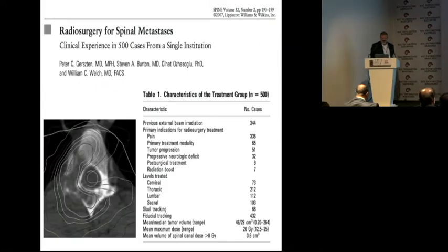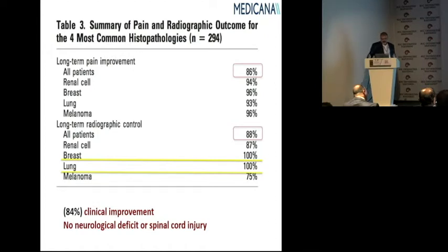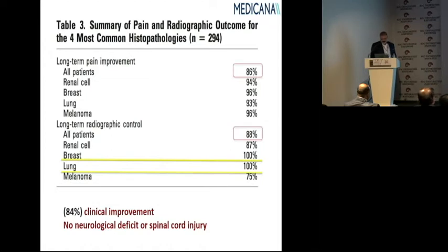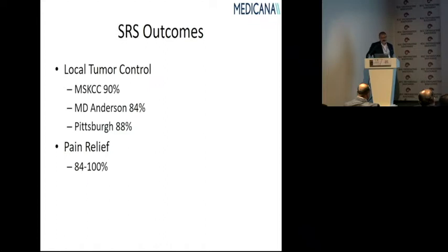Peter Gersten's 500 cases from Pittsburgh, all treated with CyberKnife radiosurgery, showed pain improvement in 86% regardless of histology — with better results for radiosensitive primaries. Long-term radiographic control was 88%, with 100% local tumor control for breast and lung cancers. There was 84% clinical improvement and no neurological deficits or spinal cord injury. Other centers report similarly: Memorial Sloan Kettering 90%, MD Anderson 84%, Pittsburgh median 88% local control, and pain relief of 84–100%.